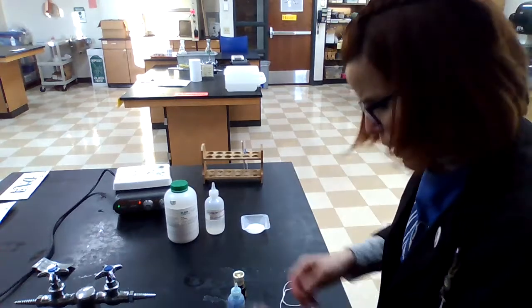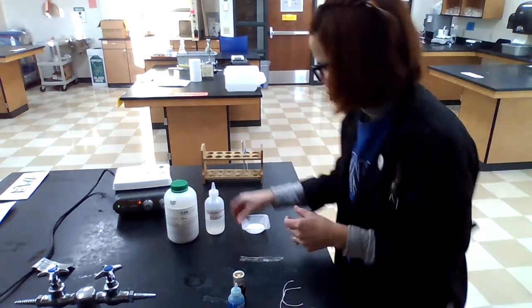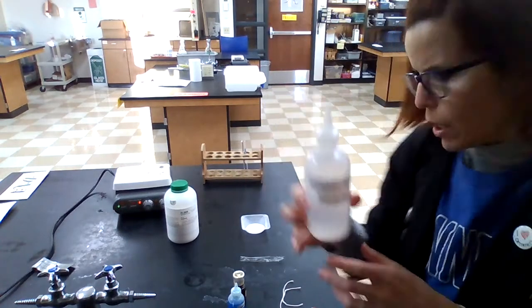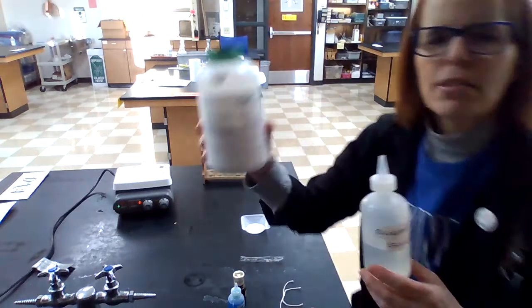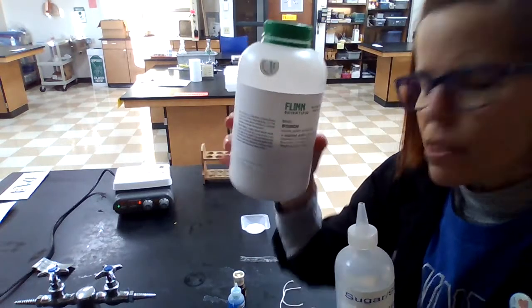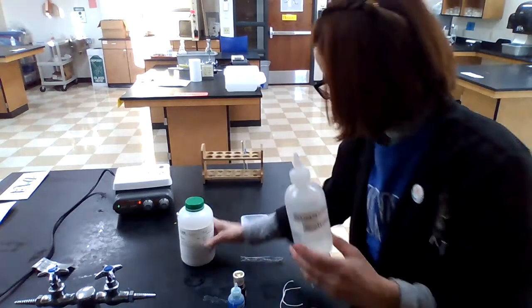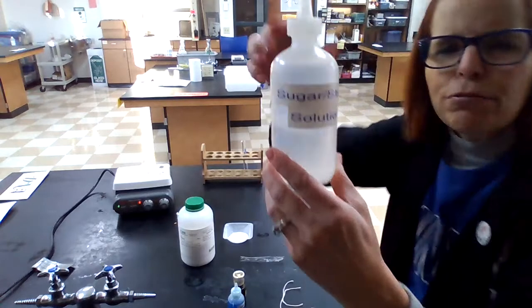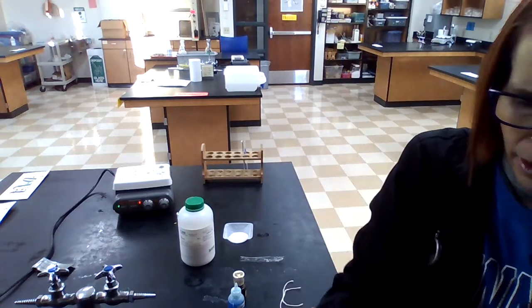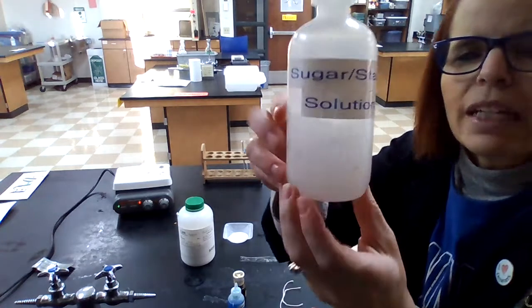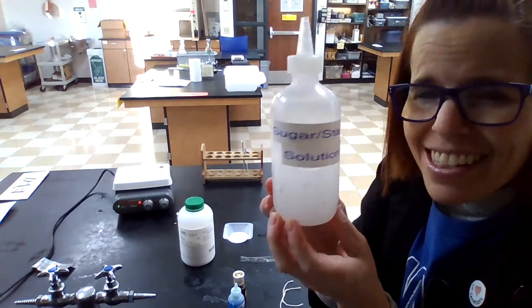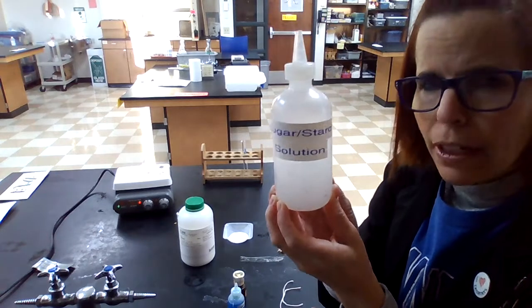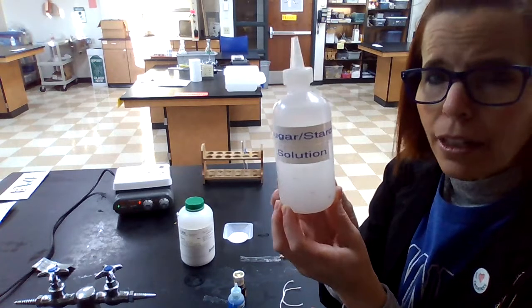I've got my semi-permeable membrane. In here I have a solution called the sugar-starch solution — just water with dissolved starch and dissolved sugar. They're floating in here. Our task today is to try to figure out which is bigger, sugar or starch.